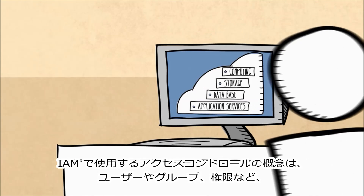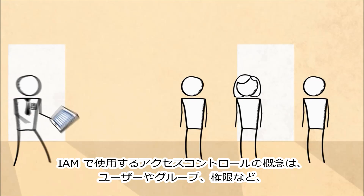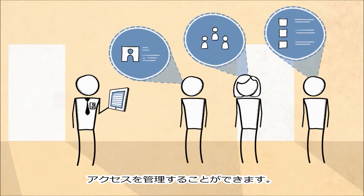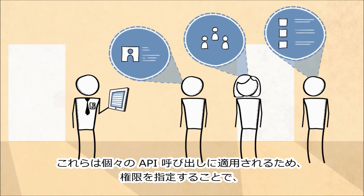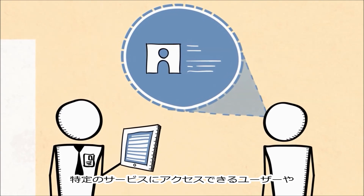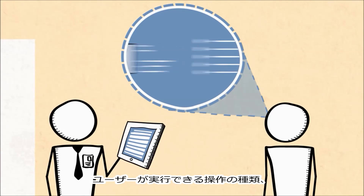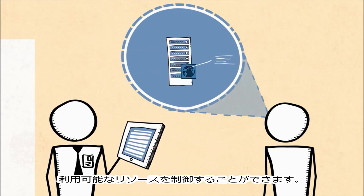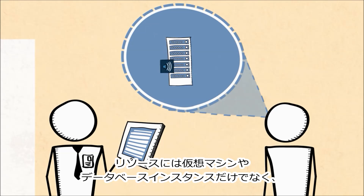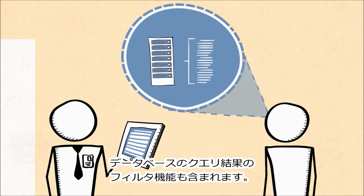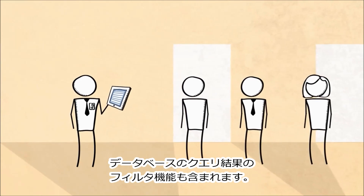IAM uses access control concepts you'll already be familiar with, such as users, groups, and permissions, which get applied to individual API calls. So you can specify permissions to control which users can access specific services, the kinds of actions they can perform, and which resources are available, ranging from virtual machines, database instances, and even the ability to filter database query results.